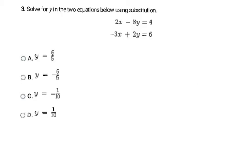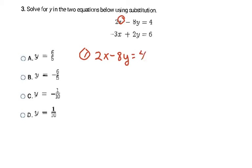In this problem they want us to solve using substitution — though if you can solve more easily with elimination on the EOI, go for it. My first step in substitution is to solve one of the equations for one of the variables. I have x's and y's to pick from, and I personally want to solve for x in the equation 2x - 8y = 4, so I want to get that x by itself.